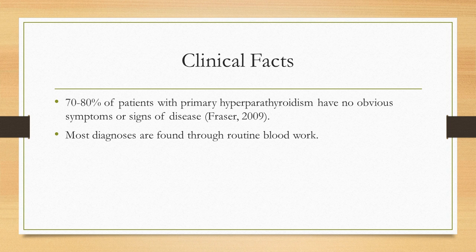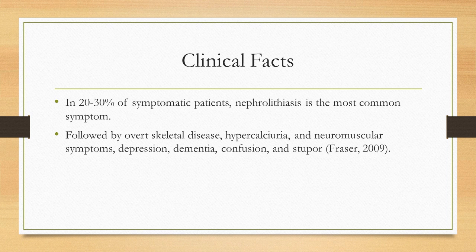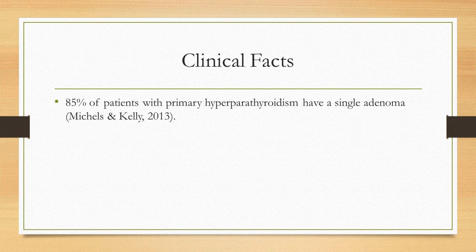Some clinical factoids: 70-80% of patients with primary hyperparathyroidism have no obvious symptoms or signs of disease, and most diagnoses are found through routine blood work. In 20-30% of symptomatic patients, nephrolithiasis is the most common symptom, followed by overt skeletal disease, hypercalciuria, and neuromuscular symptoms including depression, dementia, confusion, and stupor. 85% of patients with primary hyperparathyroidism have a single adenoma.